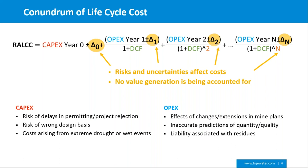These risks exist on both the capital and operating side. Risk of delays with projects can be a very significant cost to a mining company but may not show up in life cycle cost comparisons. Getting the design basis wrong, or the effect of climate change, can also be significant. On the operating cost side, you may have inaccurate predictions of water quality, and changes in mine plans are not necessarily factored into possibilities during life cycle cost analysis, even though they may impact the cost of water later in the project.